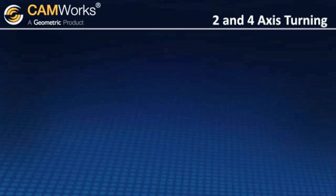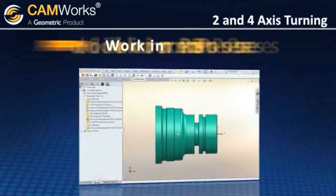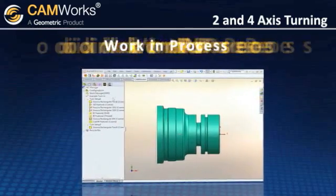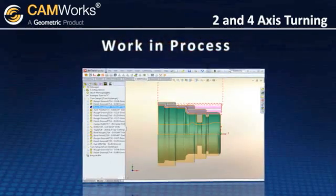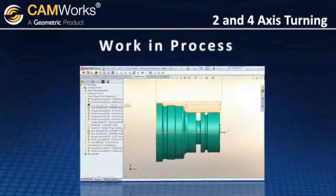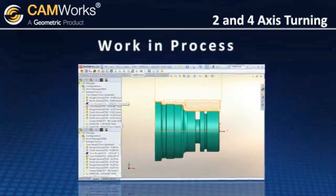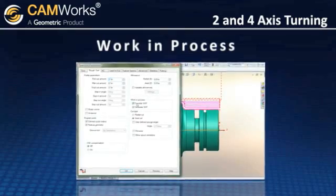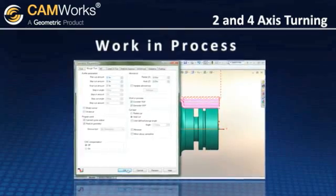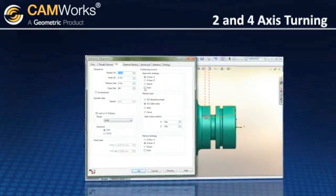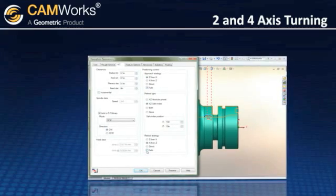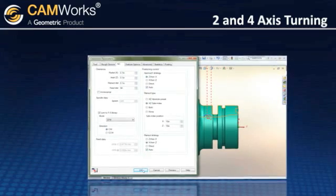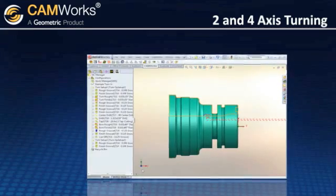For generating efficient toolpaths, the work and process function monitors the stock to generate toolpaths only where required, reducing or eliminating time wasted on air cutting. CamWorks automatically defines the tool approach and retract to avoid collision with the work and process model.